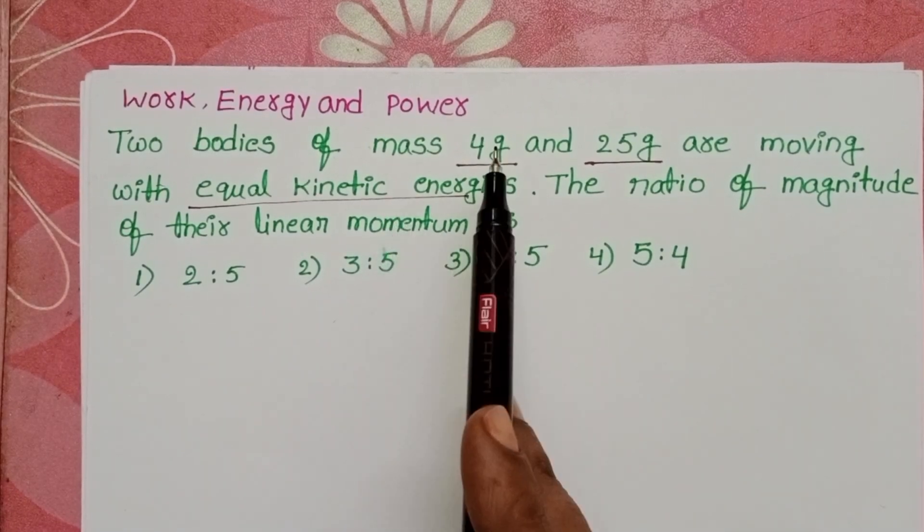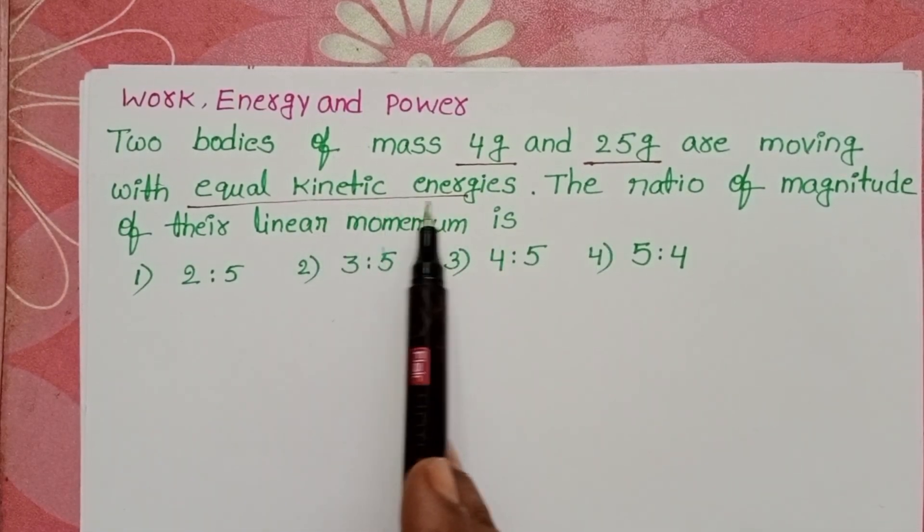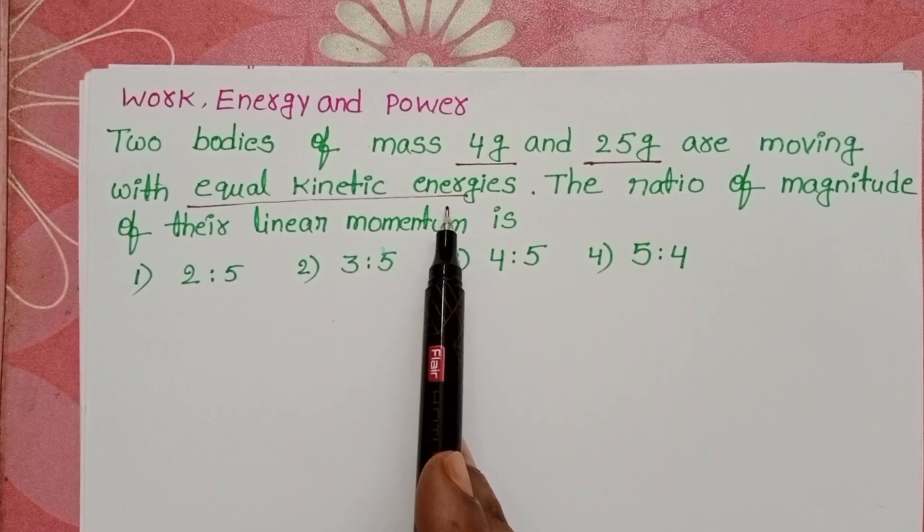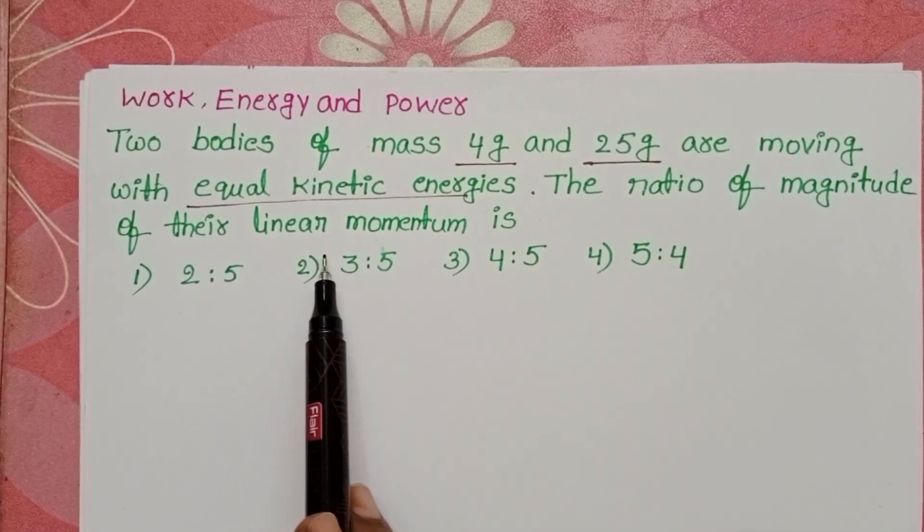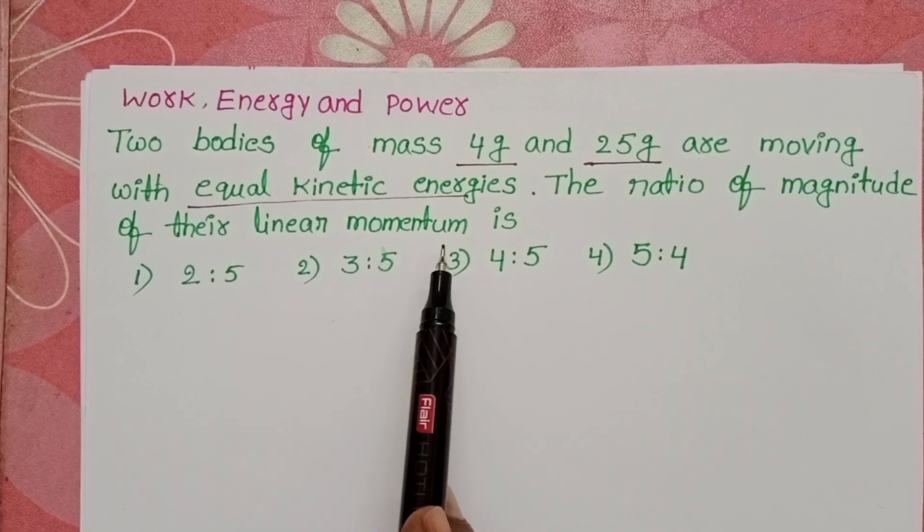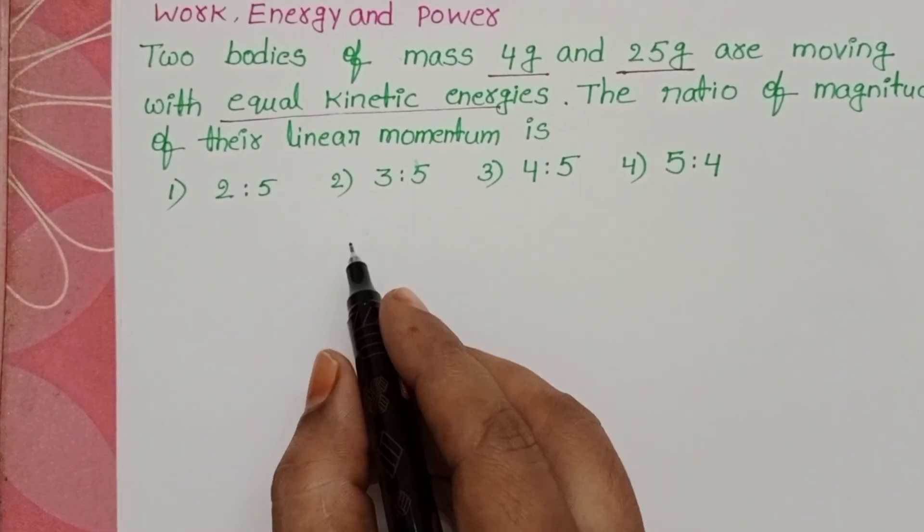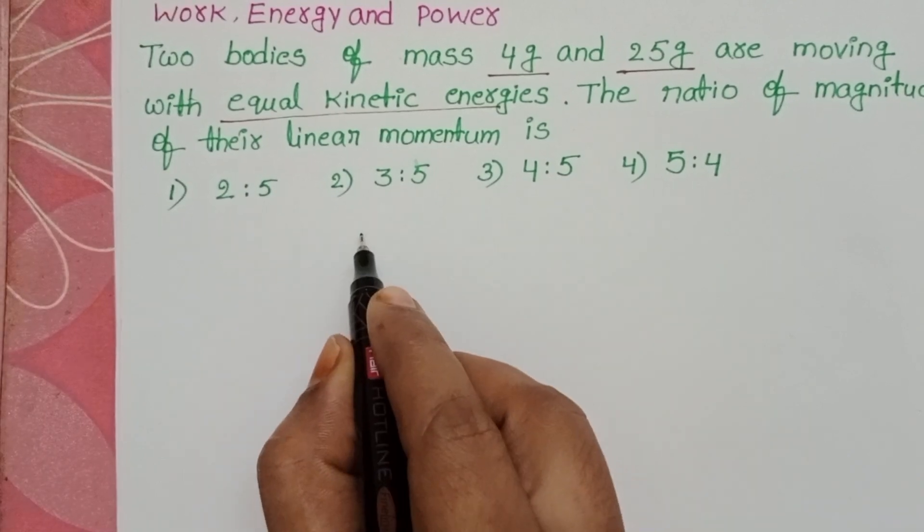In the given question, we know the mass of the two bodies and that their kinetic energies are the same. By using this, we have to find out the ratio of magnitude of their linear momentum. We know the relation between linear momentum and kinetic energy.